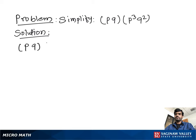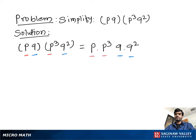Simplify pq into p to the power 3 q to the power 2, then writing p terms together and q terms together: p into p to the power 3, q into q to the power 2. Then using exponent properties, we can write p to the power 1 plus 3, q to the power 1 plus 2. Then we get p to the power 4 and q to the power 3.